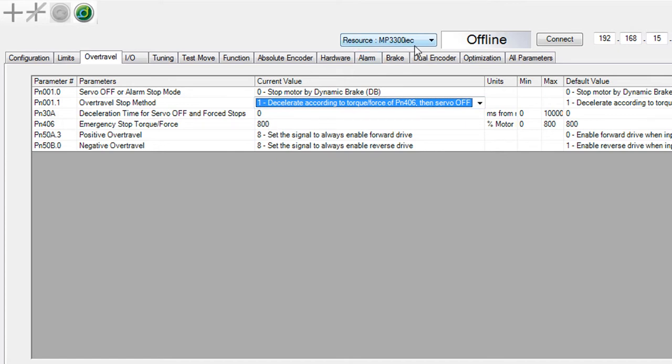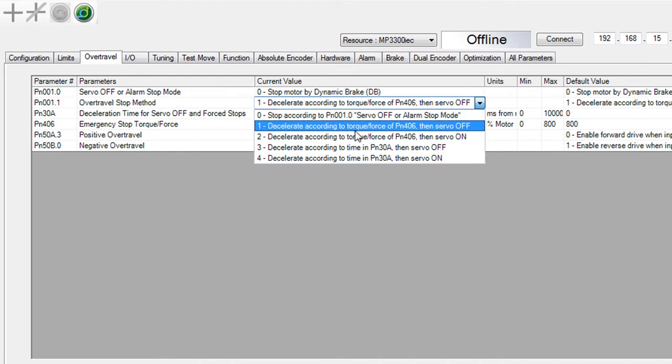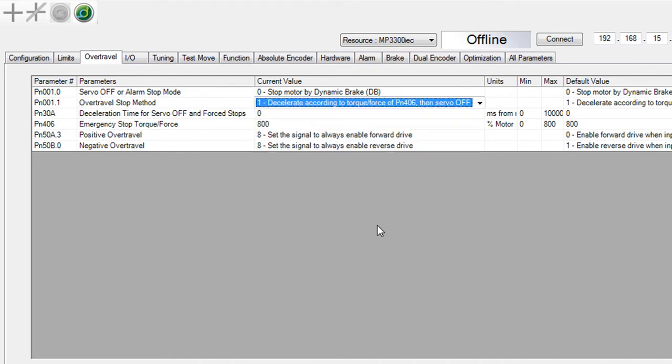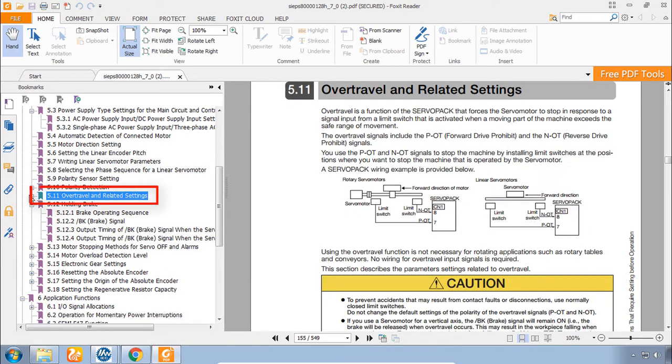It's just the highest torque possible. Well, you can also choose to stop according to this other parameter PN001. And so you choose the stopping method that best suits your application. There's a new one here also the deceleration time. You can have a motor stop over a certain time. Of course more details are always in the manual. This is chapter 5.11 over travel and related settings.